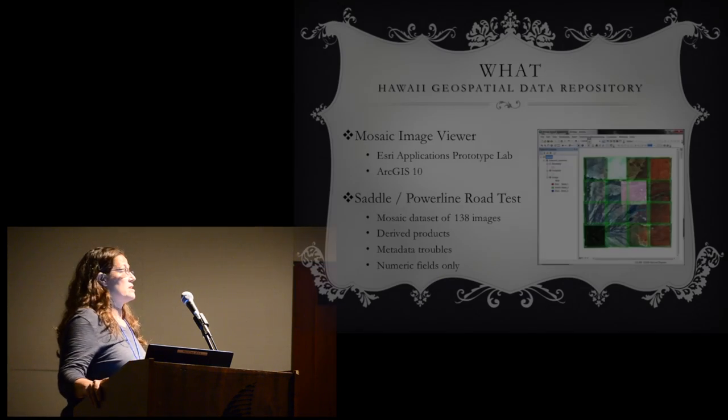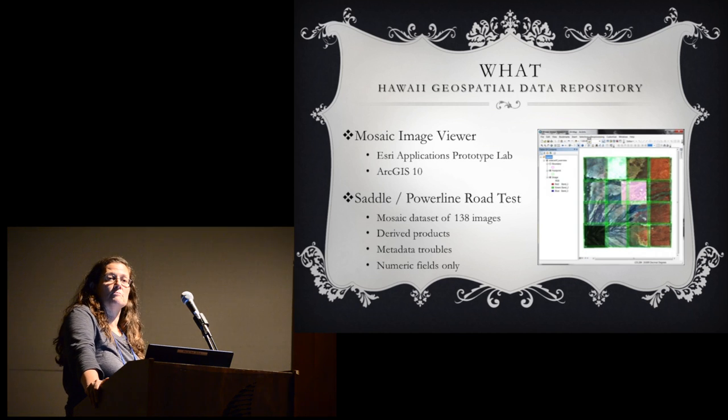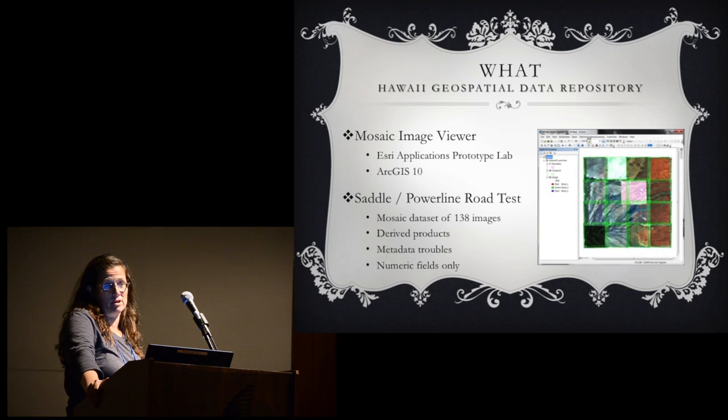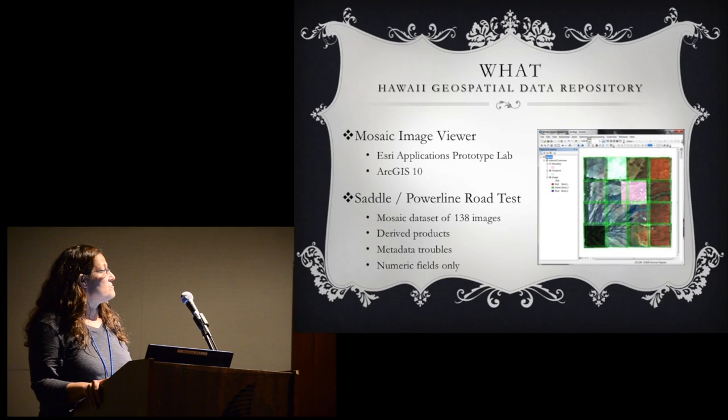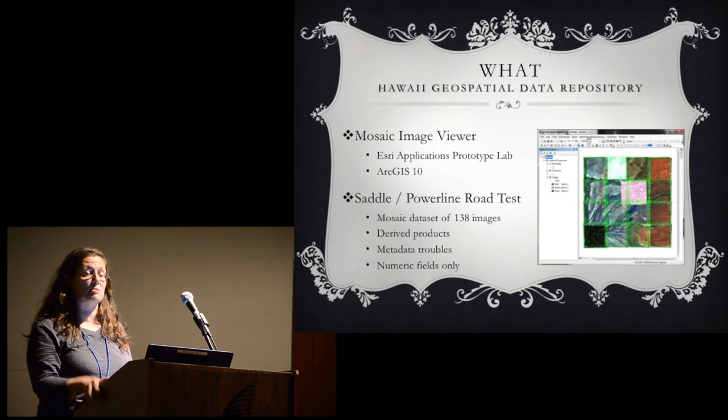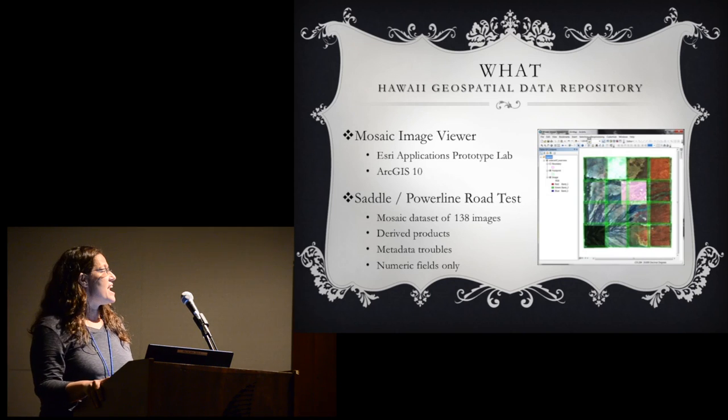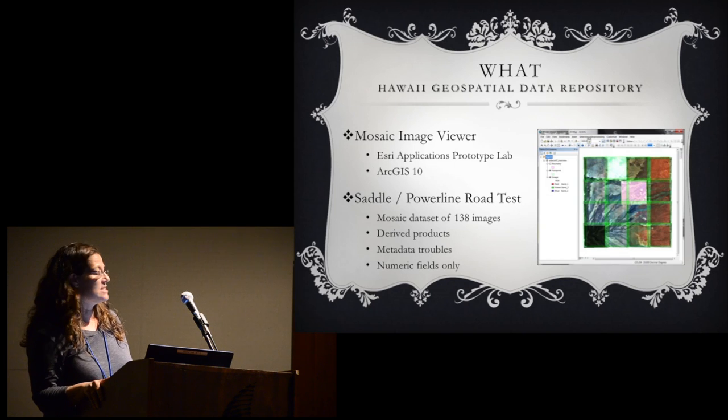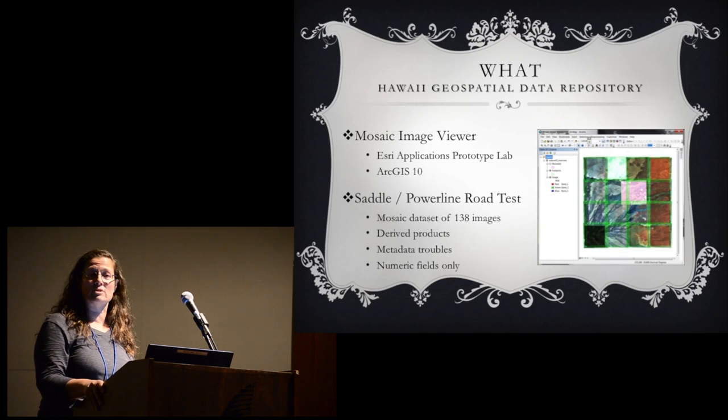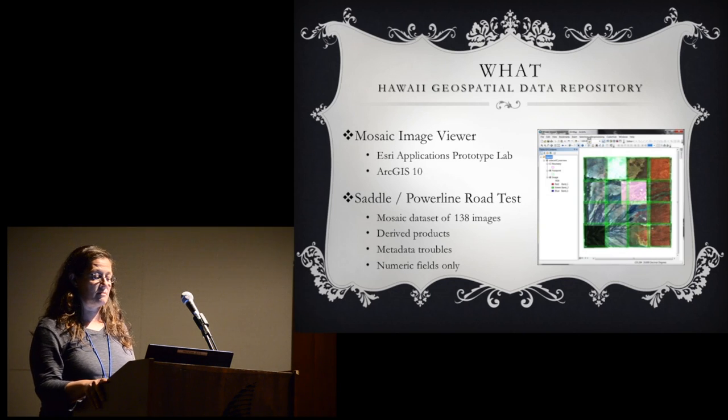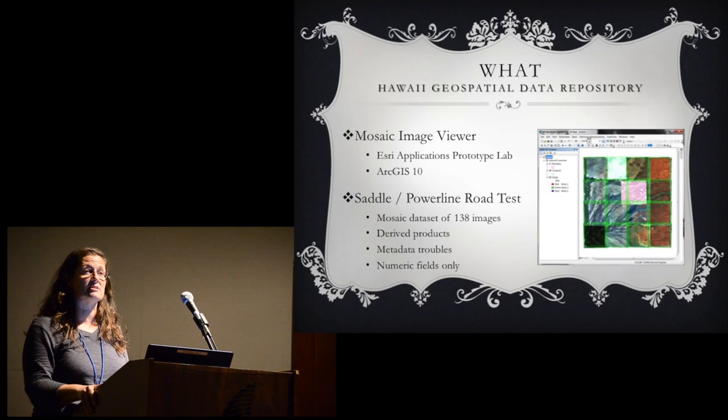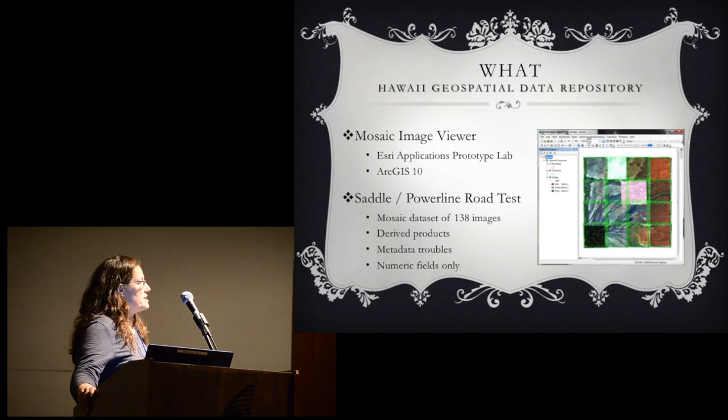What are we working on? One of our goals is to host imagery. Not only imagery but raster products so that you can use it in your work. We're very excited about what ESRI is allowing people to do now with raster datasets and the mosaic catalogs. We did test using the Seville Road imagery. We were able to in our test environment build out a mosaic of 138 images. They were all derived products.